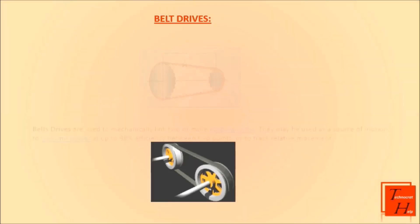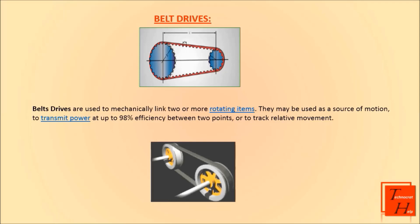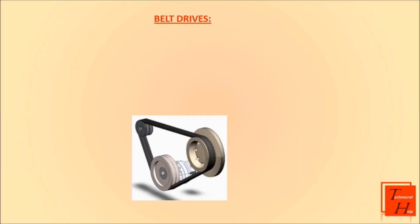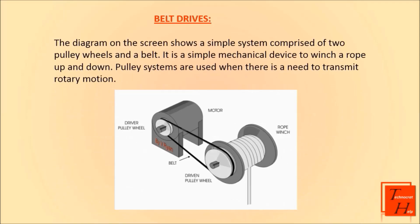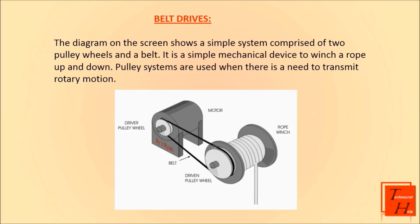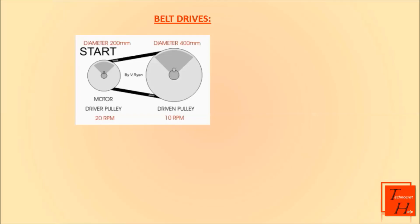Belt drives are used to mechanically link two or more rotating items. They may be used as a source of motion to transmit power at up to 98% efficiency between two points, or to track relative movement. It is a method of transferring rotating motion between two shafts, though belt drives have relatively high inspection and maintenance demands. The diagram on the screen shows a simple system comprised of two pulley wheels and a belt — a simple mechanical device to winch a rope up and down. Pulley systems are used when there is a need to transmit rotary motion.